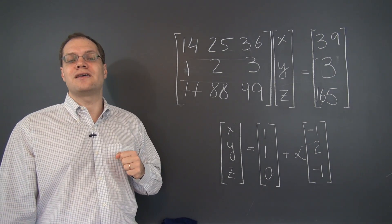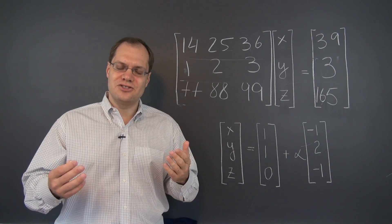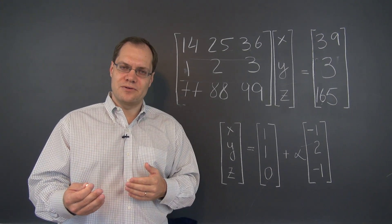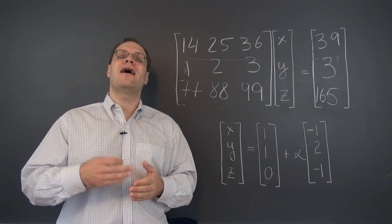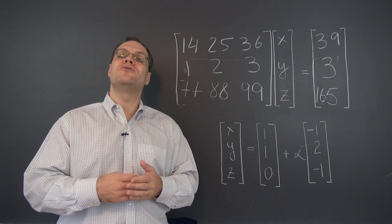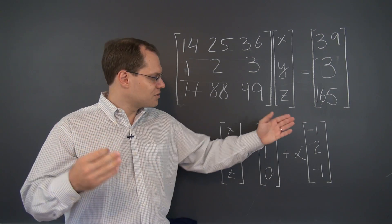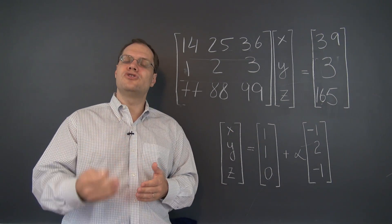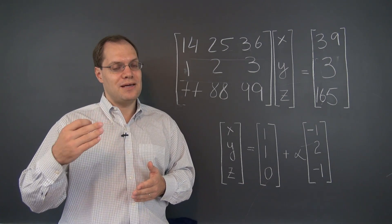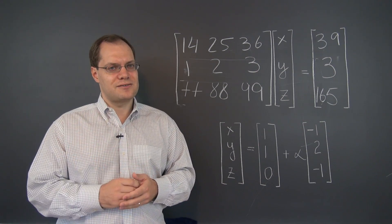Now let's work out a strategy for using these row operations in such a way as to make the entries of the matrix and the right-hand side so simple that the relationships — which may not be apparent to begin with — become obvious.